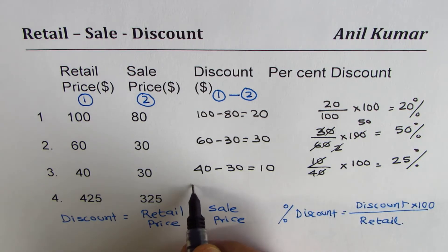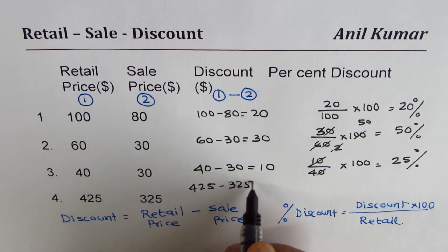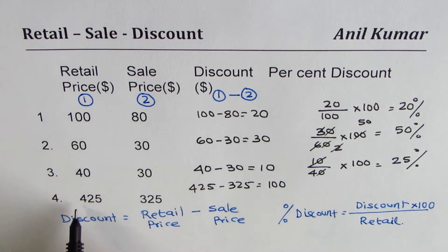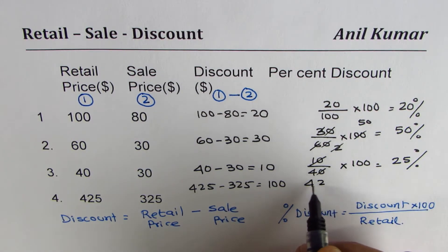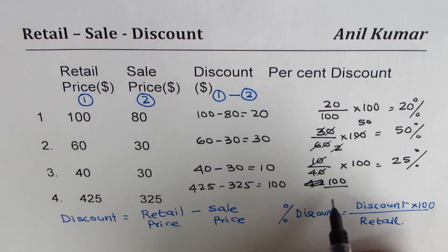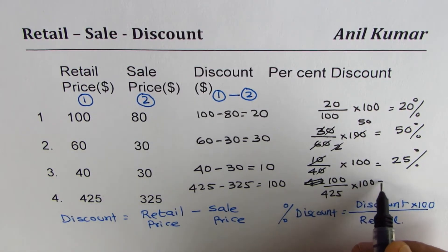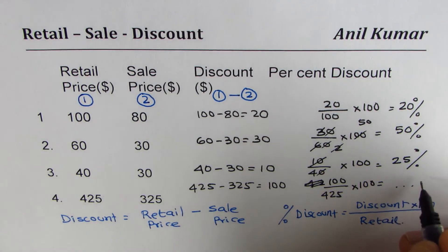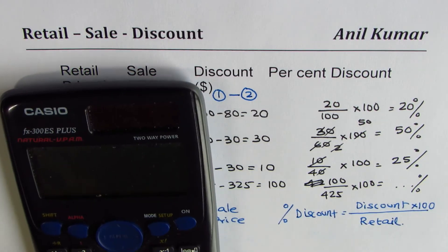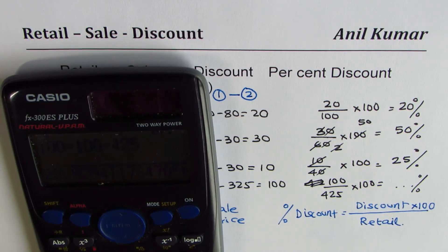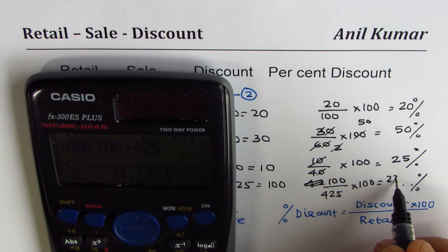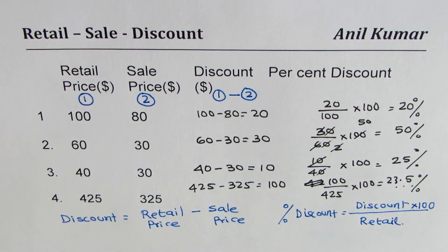The last example: $425 retail minus $325 sale gives a discount of $100. This $100 is on a retail price of $425, so we calculate 100 divided by 425, times 100. We'll use a calculator — 100 times 100 divided by 425 — and that gives us 23.5 percent rounded. That is how you calculate percent discount when the retail and sale prices are given.